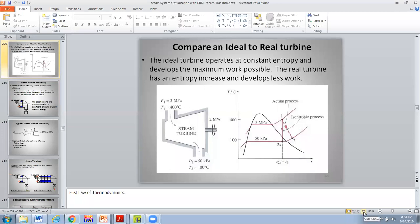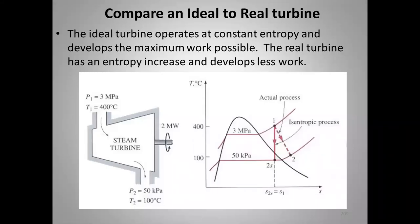This is where we left off in class. We looked at the definition of isentropic efficiency. The inlet condition is at high pressure — we start at condition one — and for the isentropic turbine it drops straight down at constant entropy to the lower exit pressure.